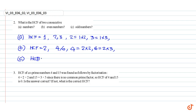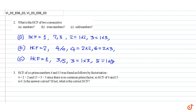Part C: odd numbers. HCF is equal to one. In the case of three and five, three can be written as one into three, five can be written as one into five, therefore HCF is equal to one. These are our answers.